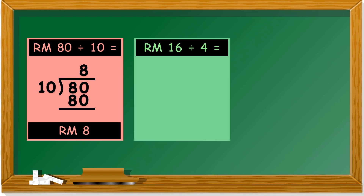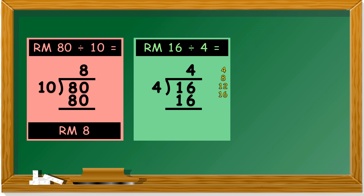Next, 16 ringgit divided by 4. Division form: 16 divided by 4. Multiplication of 4 is to the tune of 'Are You Sleeping?' So it's 4, 8, 12, 16. How many fingers are open? 4. So 16 ringgit divided by 4, the answer is 4 ringgit.